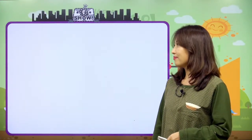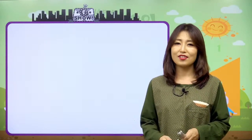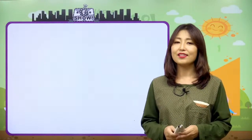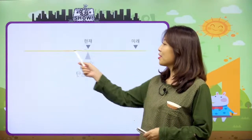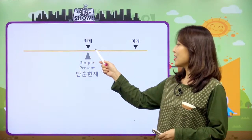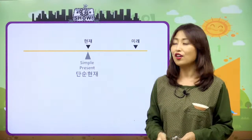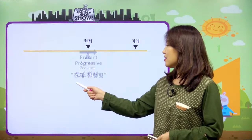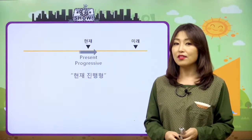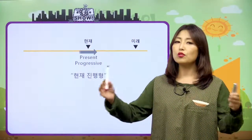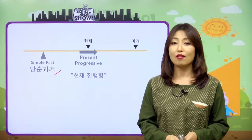지난 시간에 과거 동사 변화 배우느라고 힘들었잖아요. 그거 다 기억해야 되는데, 오늘은 조금 편안한 시간을 준비했어요. 여기 시간의 바가 있고요, 현재, 미래, 그리고 첫 번째 시간을 만난 게 단순 현재였고, 두 번째 진행형에 대해서 배워봤어요. 그리고 지난 시간에 단순 과거, simple past에 대해서 배웠어요.